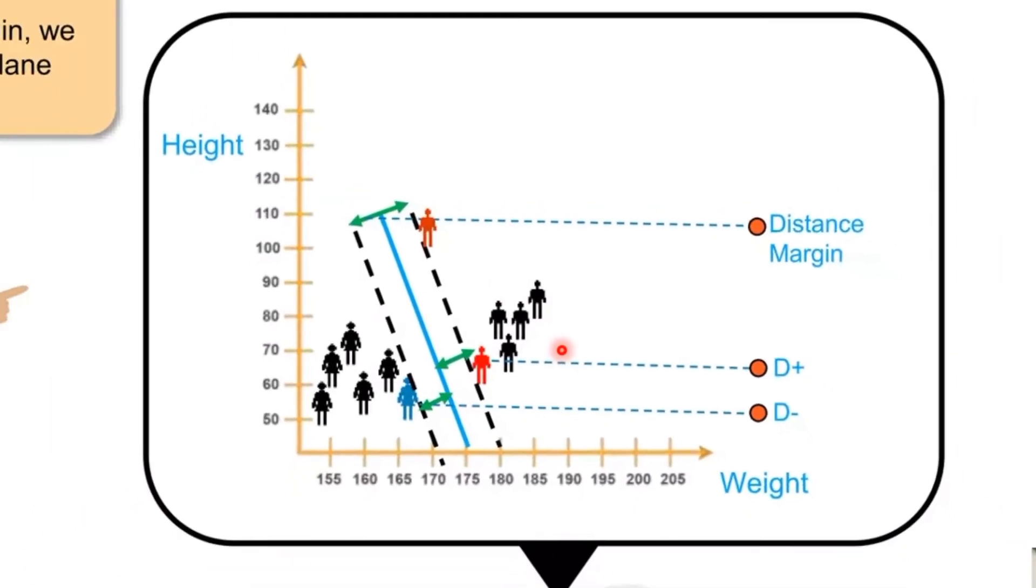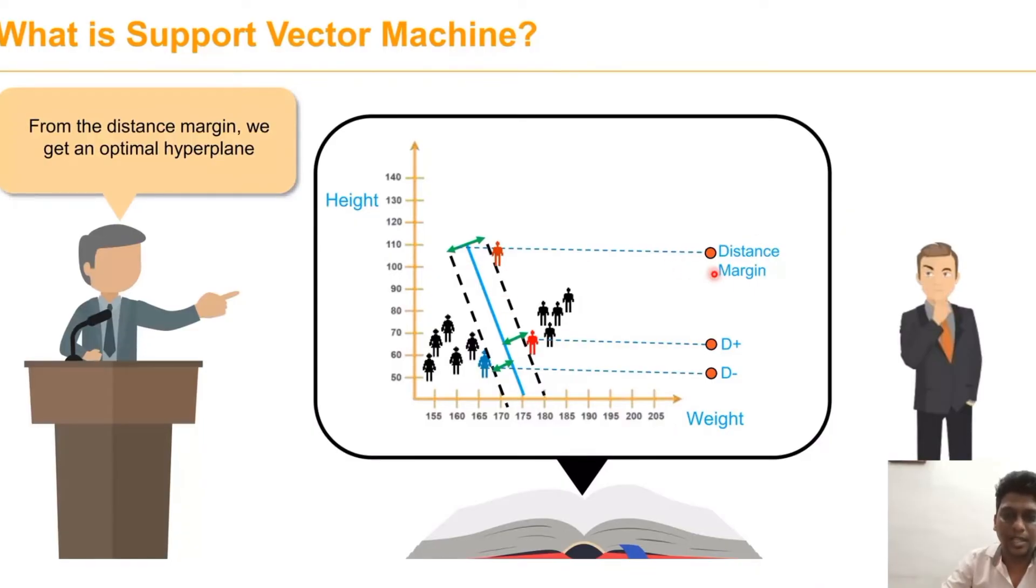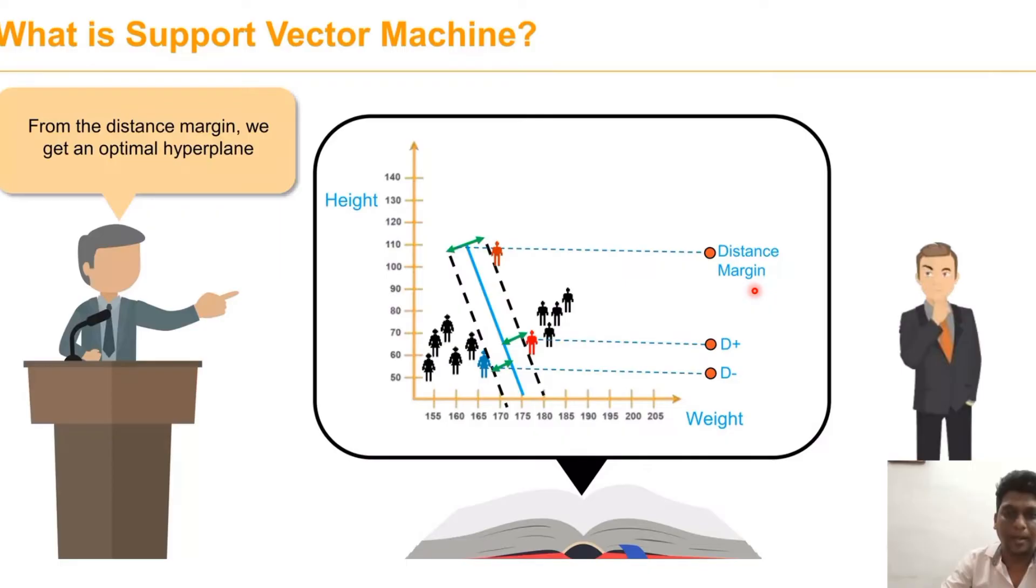From the distance margin, we can calculate the optimal hyperplane. It helps us to find the optimal hyperplane.